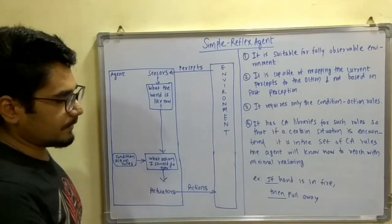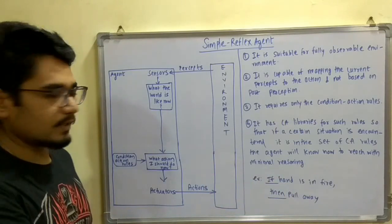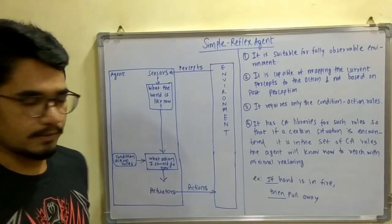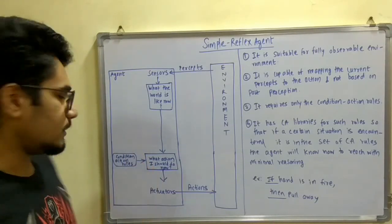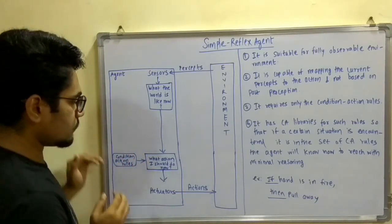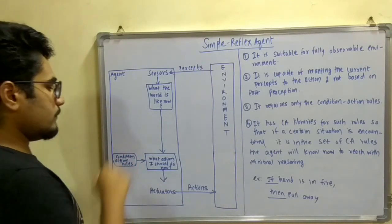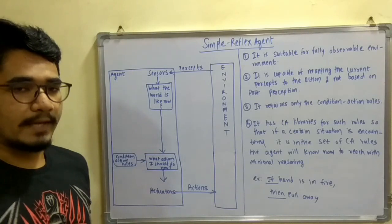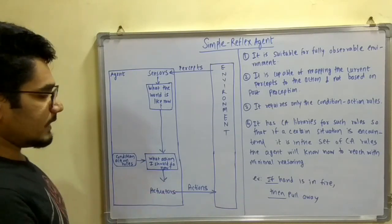Let me give an example. If hand is in fire, then you have to pull it away, otherwise you will get burnt. That is one kind of knowledge which we can learn. If we input this into the condition action rule and drive it to what action should I do now, it will produce or make its actuators work in that way.